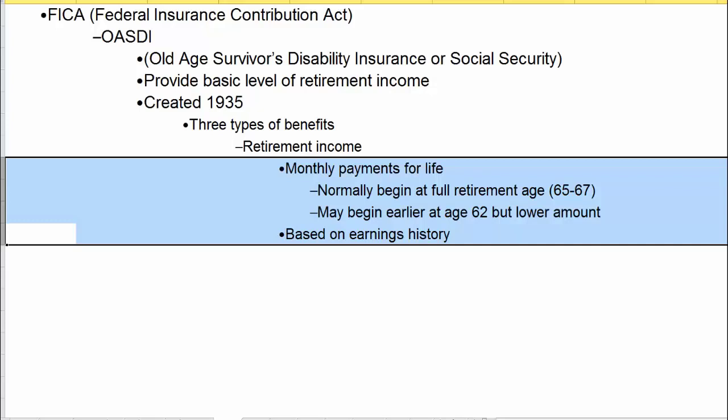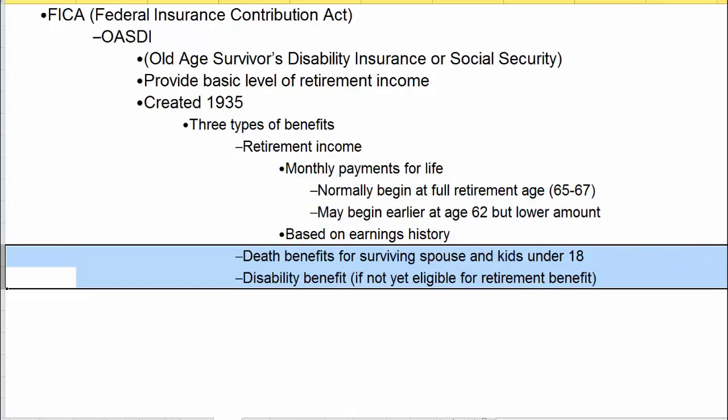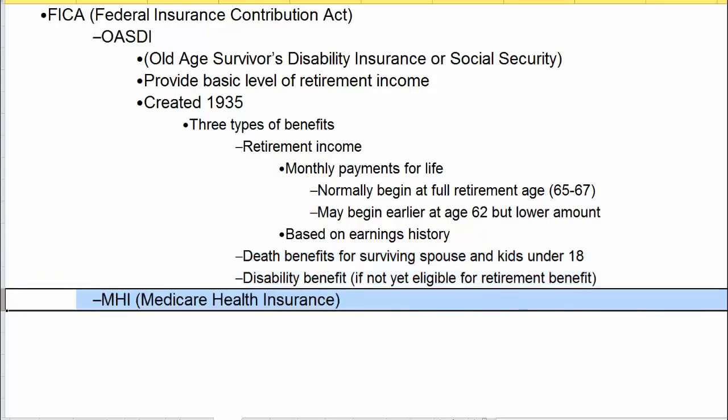If you wait until you're 70, the retirement payments are higher than at full retirement age, and they continue to go up if you wait even longer. There are also death benefits for surviving spouses and children under 18, and a disability benefit if you're not yet eligible for retirement.